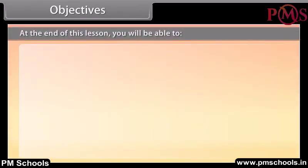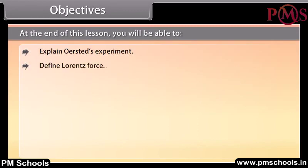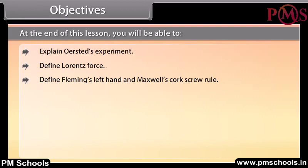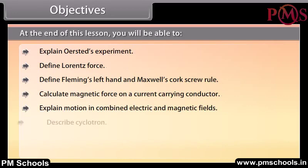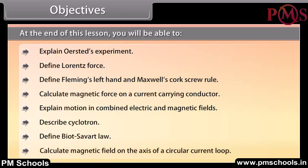At the end of this lesson, you will be able to: explain Oersted's experiment; define Lorentz force; define Fleming's left hand rule and Maxwell's corkscrew rule; calculate magnetic force on a current carrying conductor; explain motion in combined electric and magnetic fields; describe the cyclotron; define Biot-Savart law; and calculate the magnetic field on the axis of a circular current loop.